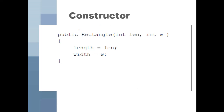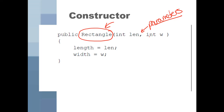Here's what constructors always look like: you have the name of the class, public, and then your parameter list. In this case, the variables needed to create a Rectangle are length and width. Inside the constructor, you assign the instance variables to the parameters. The parameters are what get sent when you create your object — so to make a rectangle you'd provide, say, five and three, and those get assigned to length and width.